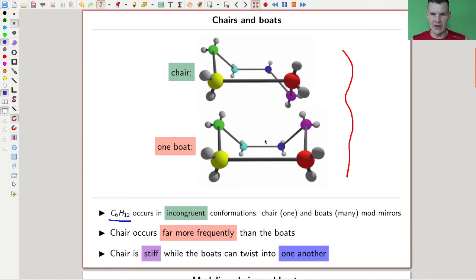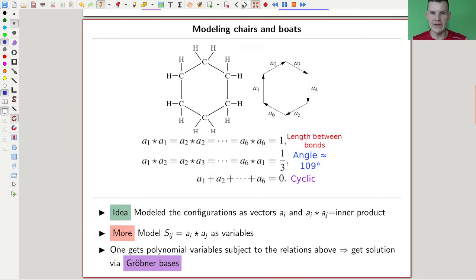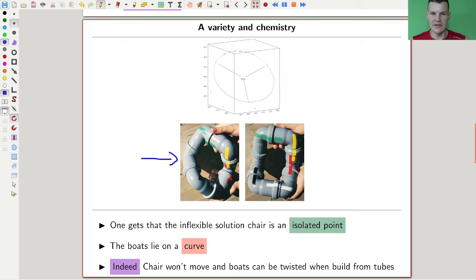I built the boat and the chair. And if you do it, one of them will be moving, and the other one is kind of very stiff. You get a flexible solution, which are the boats, they lie on a curve, while the chair solutions are just isolated points in that variety.